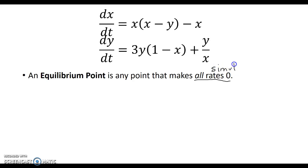That is very important to us. Simultaneously, meaning that it's not good enough just to make one of the rates zero while the other is some nonzero value. We want to make them all zero. In this case, we want to solve where dx/dt is zero. If dx/dt would replace this with zero, then we have x times (x - y) - x. Similarly, for dy/dt, we set it equal to zero and we have 3y(1 - x) + y/x.